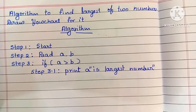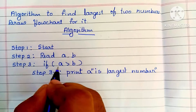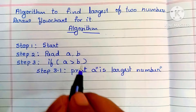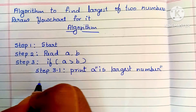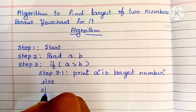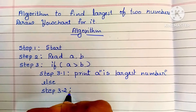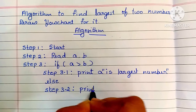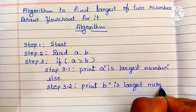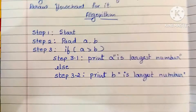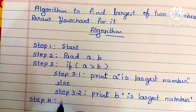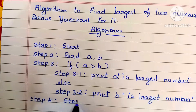That print statement is written within double inverted commas. Next, if a greater than b is false, we write the else statement — step 3.2 — and print 'b is largest number'. In step 4, we stop the algorithm by writing the stop statement.